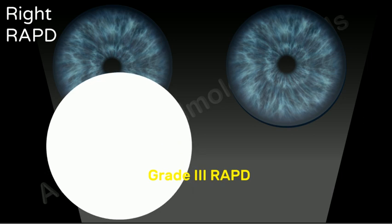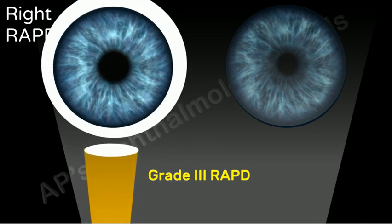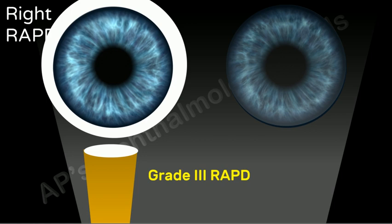In grade 3 RAPD, there is an immediate dilatation. The grade is determined after taking the average of a minimum of 6 swings.